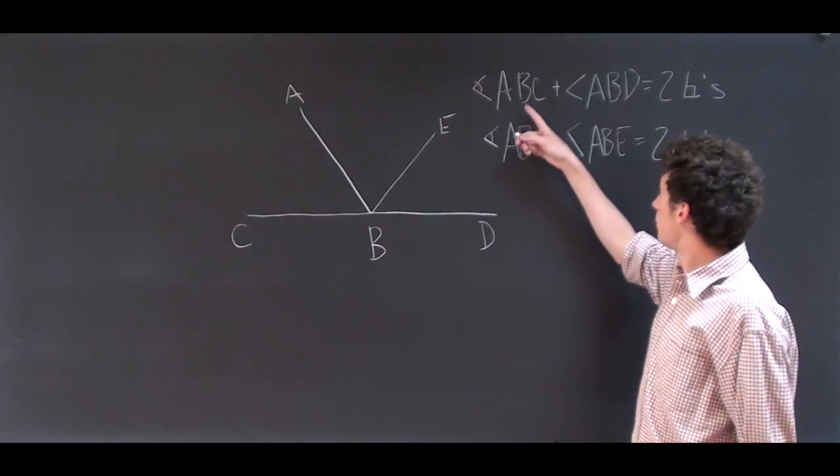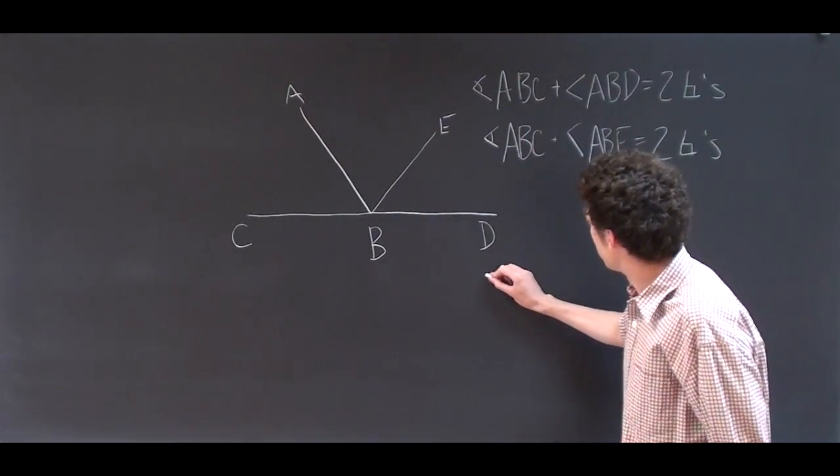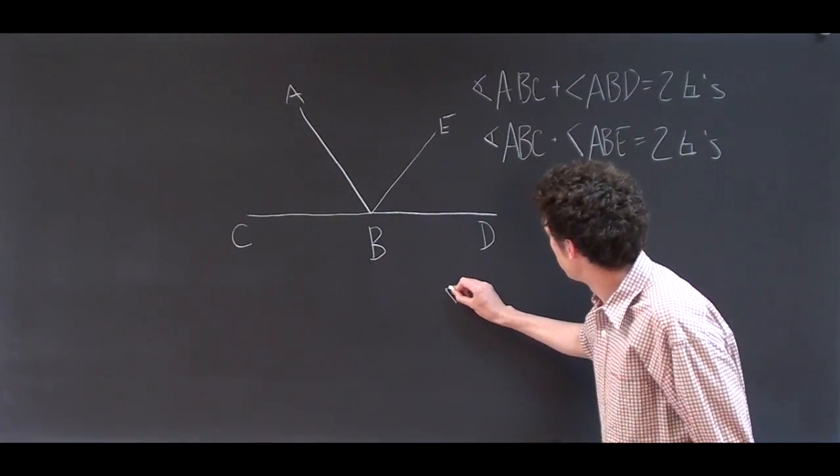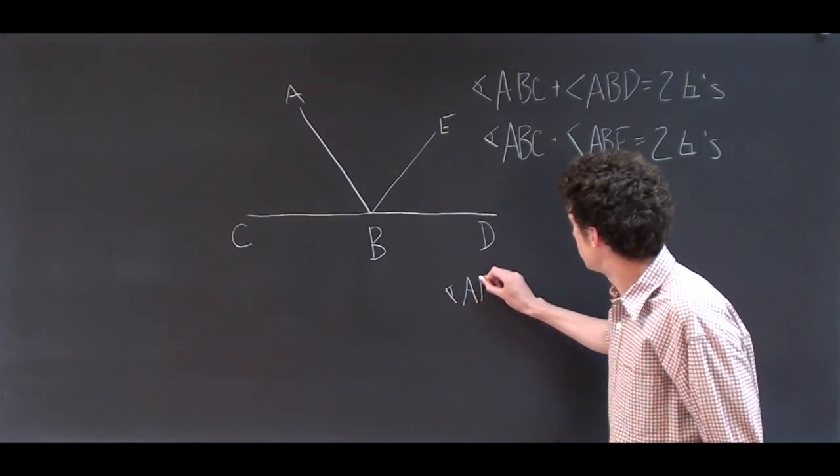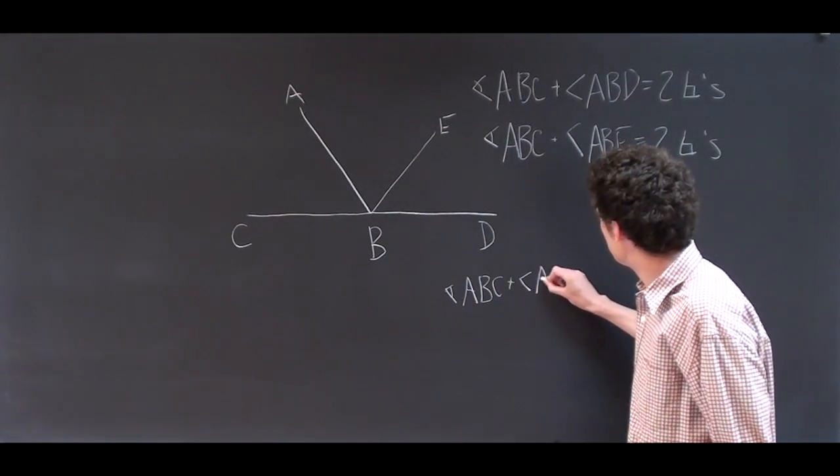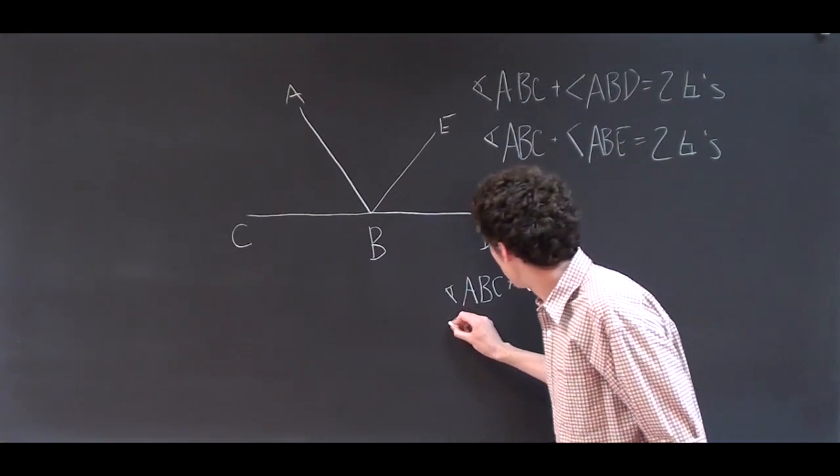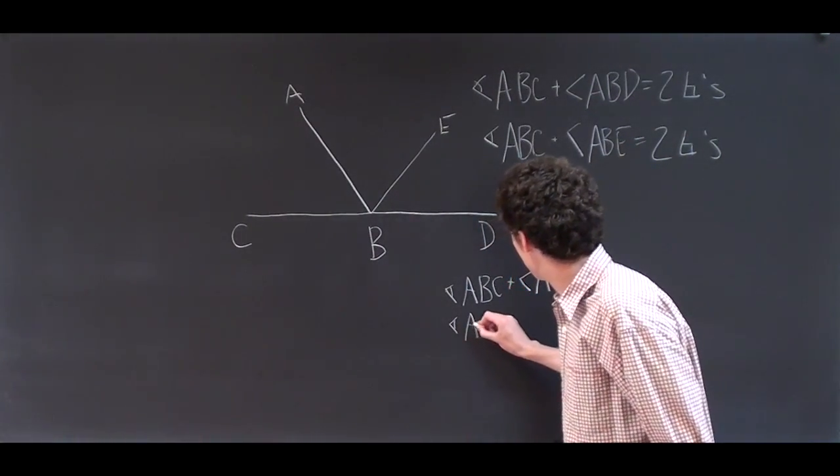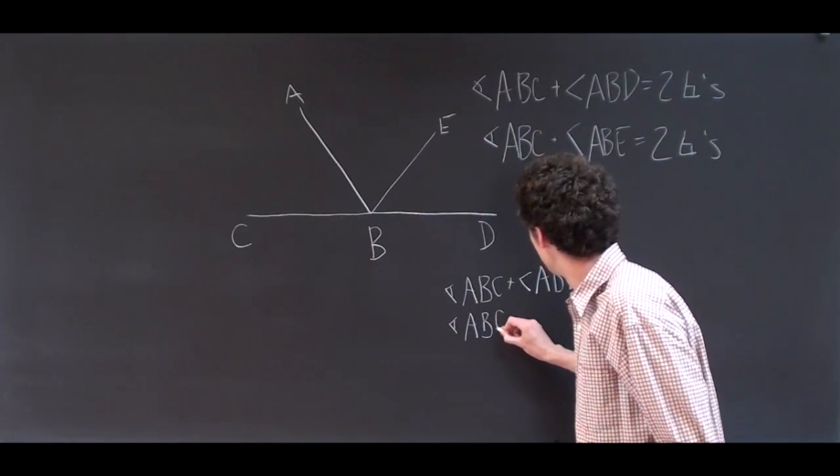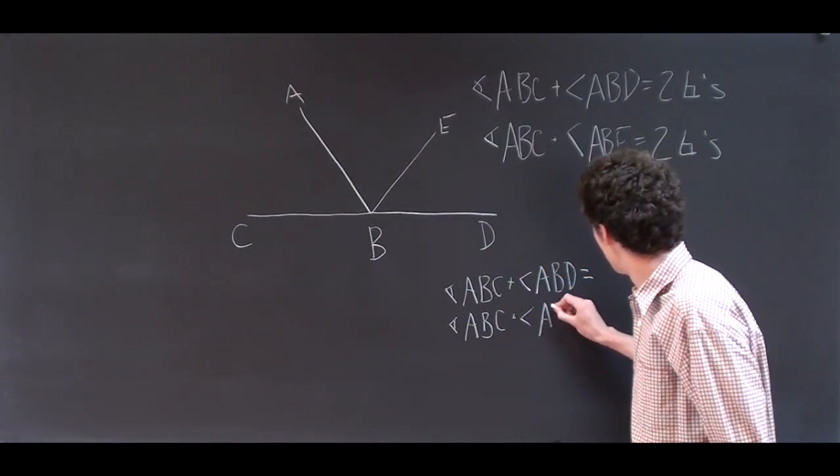Because both of these equal two right angles, they're equal to each other. So I'm going to write angle ABC plus angle ABD equals angle ABC plus angle ABE.